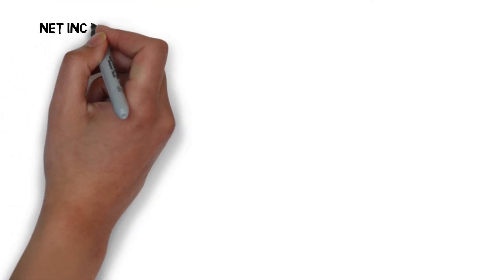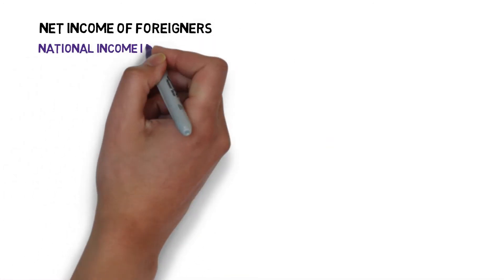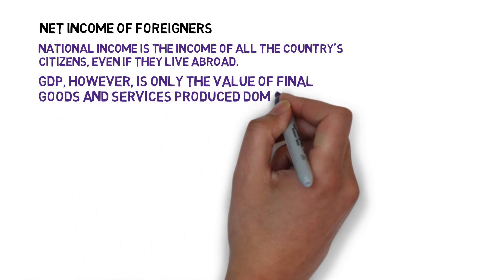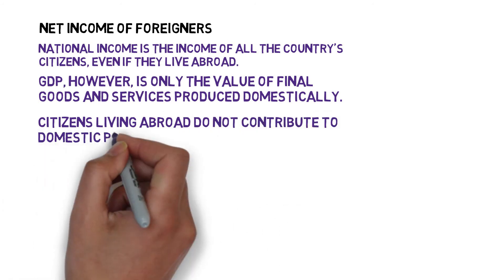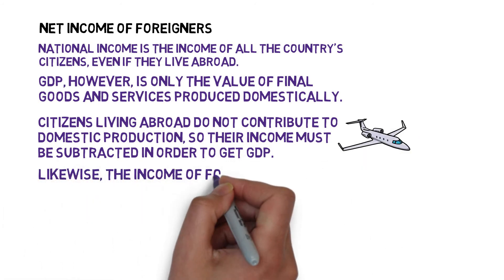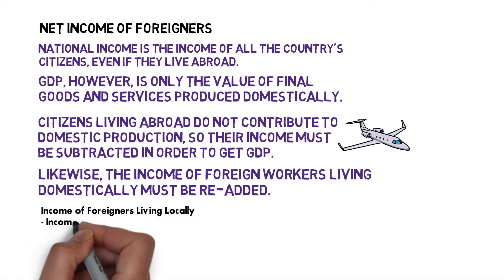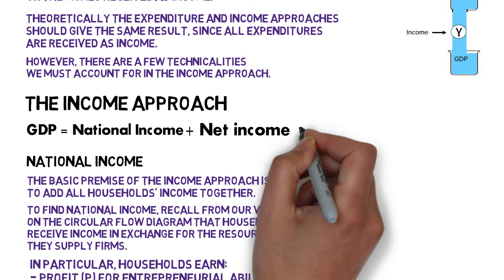The first technicality we have to consider is net income of foreigners, and this stems from a difference between GDP and national income. National income is the income of all the country's citizens even if they live abroad. GDP, however, is only the value of final goods and services produced domestically. So to represent GDP through national income, we have to make sure we're only looking at people who live domestically. The citizens who live abroad, because they don't contribute to GDP, their income has to be subtracted. Likewise, the income of foreign workers living domestically has to be re-added because those foreign workers do contribute domestically. So if we take the difference of these two things — income of foreigners living locally and income of citizens living abroad — we get net income of foreigners, and we have to add this back to our equation in order for it to represent GDP.